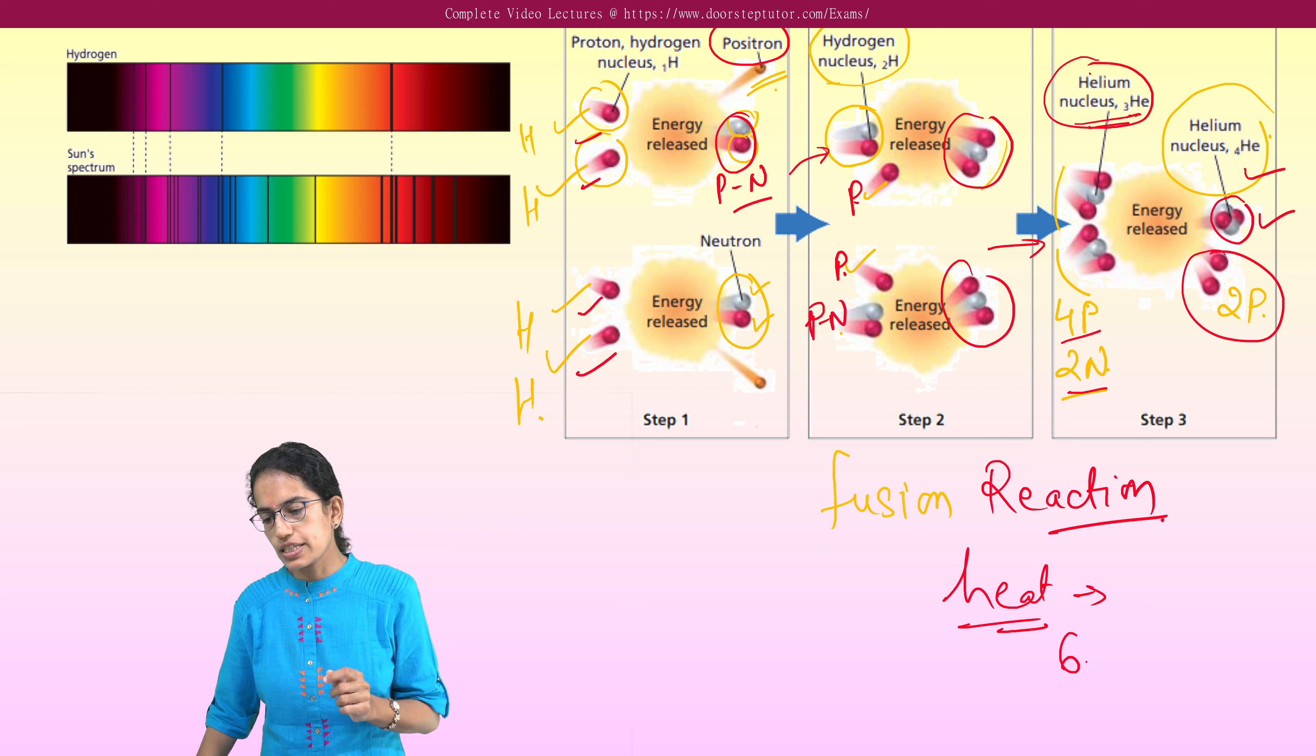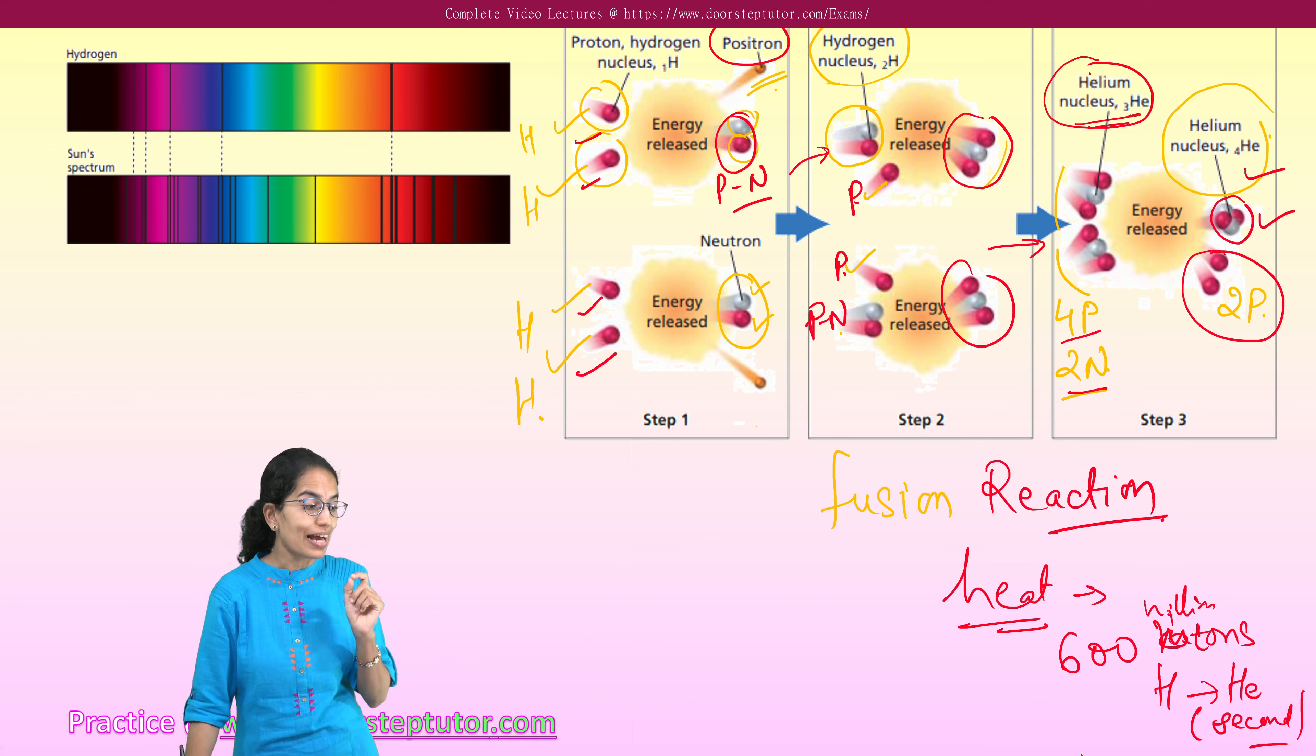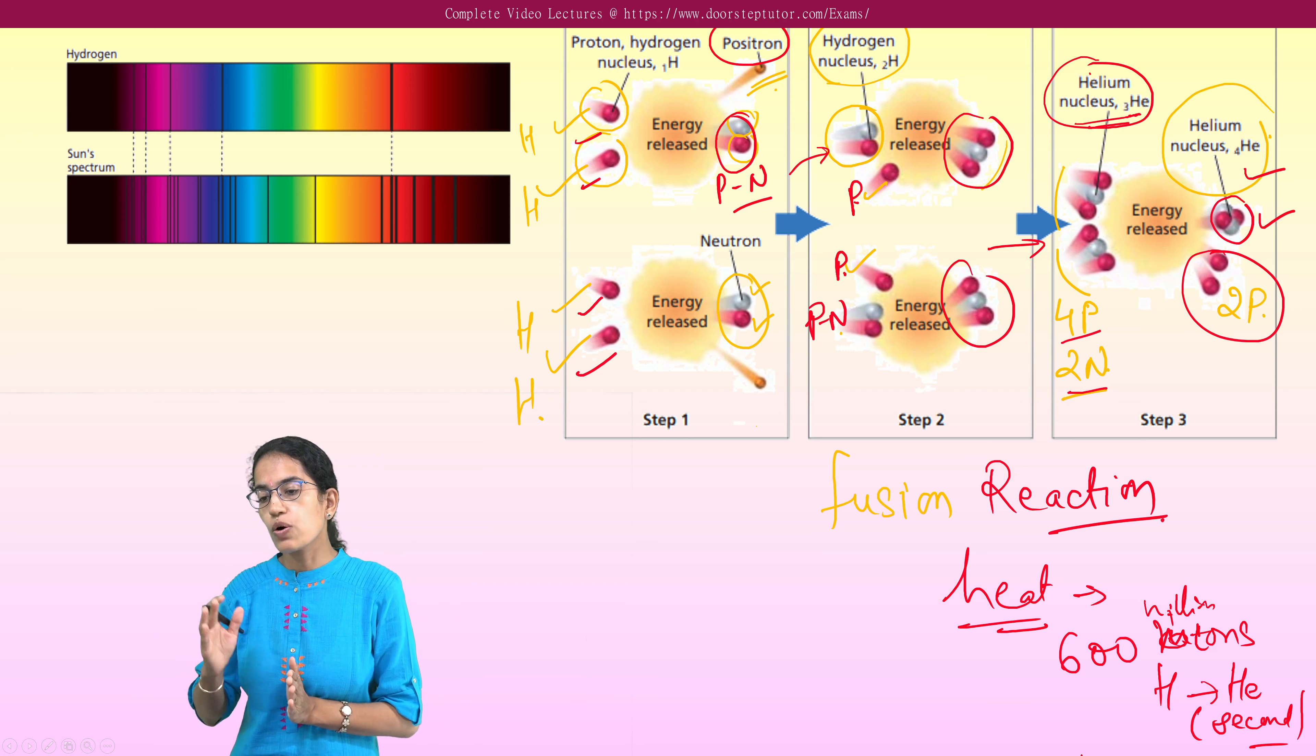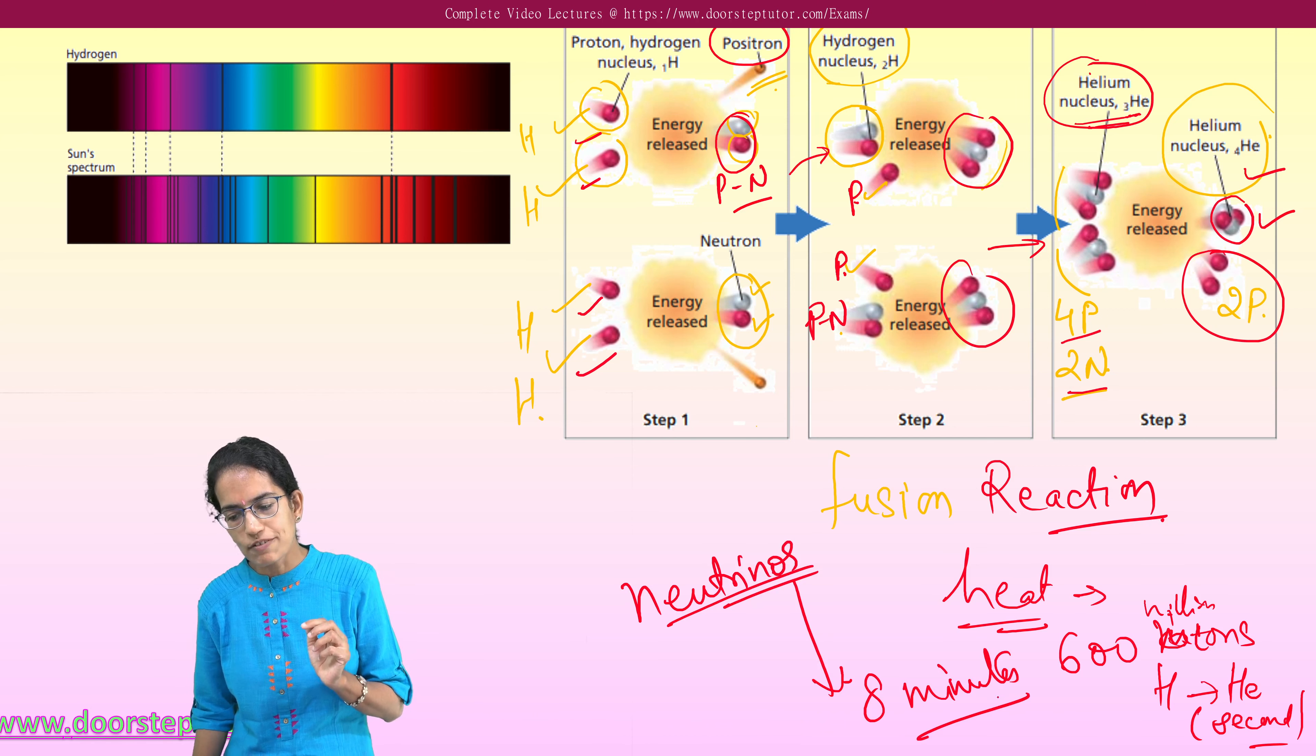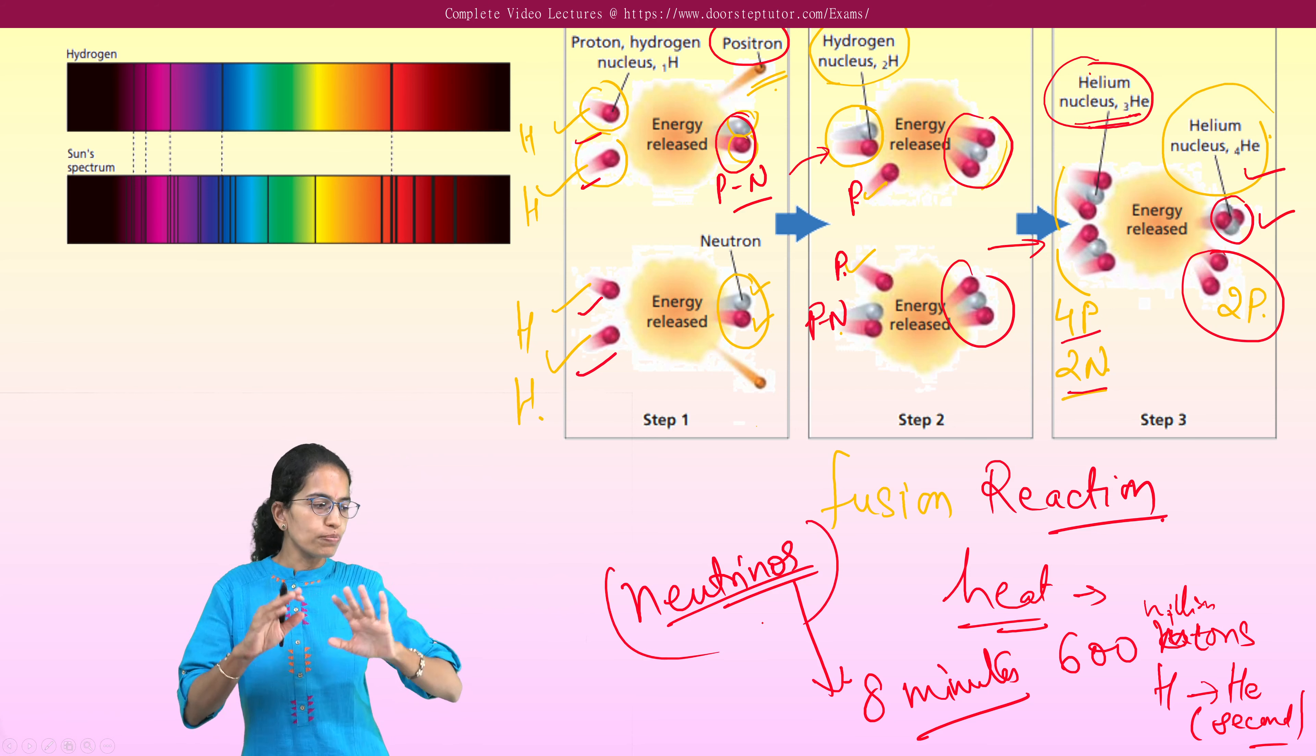So sun, within the sun we can say nearly 600 million tons, 600 million tons of hydrogen would change into helium every second. You can imagine the extent, every second 600 million tons of hydrogen would change into helium and neutrinos would be released. When neutrinos are released, these neutrinos would come to the earth and would reach the earth in eight minutes and therefore we say that we get the light from the sun in eight minutes. So what we obtain is neutrinos.